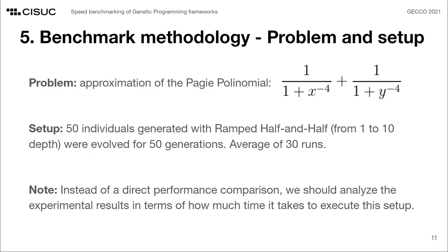To determine speedups at different domain sizes, we defined a square domain within a constant range and 7 domain sizes of increasing resolution, with each domain size having 4 times the amount of evaluation points than the previous. In addition, TensorGP was run on both a CPU and a GPU to better understand how hardware limitations impact genetic programming. More importantly, we should see this comparison in terms of how much time it will take to execute the same setup across all frameworks considered.